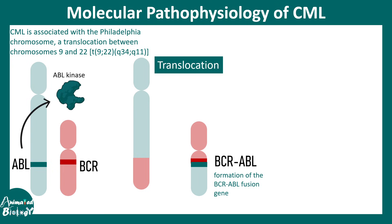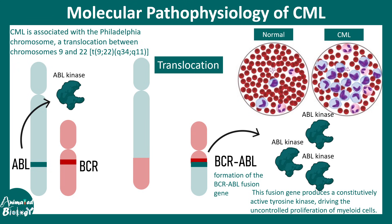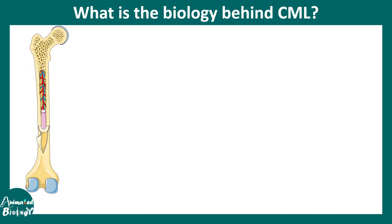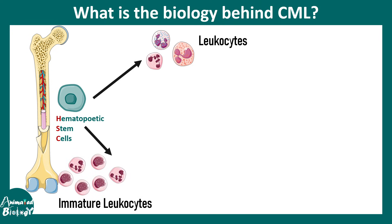Generally, ABL produces an ABL kinase, which is a regulator of cell division and cell proliferation. When more and more ABL kinase is produced and these kinases are active in an unregulated fashion, that leads to over-proliferation of immature white blood cells, which leads to leukemia. Normally, hematopoietic stem cells give rise to mature leukocytes, but immature leukocytes are produced when this kind of translocation happens.